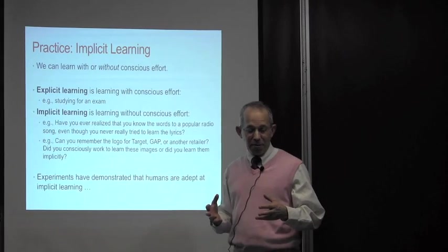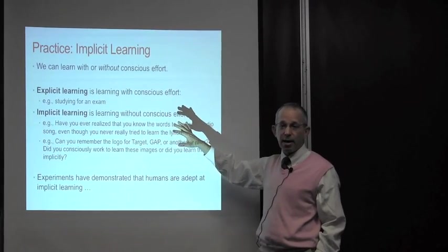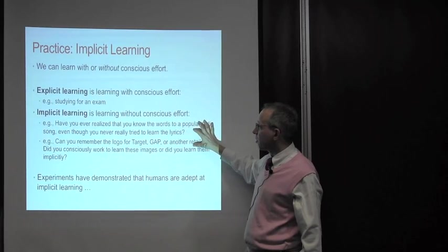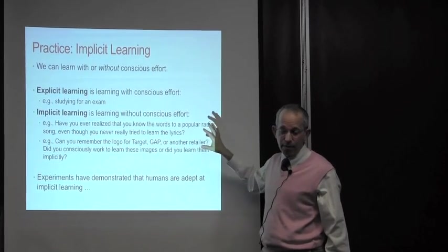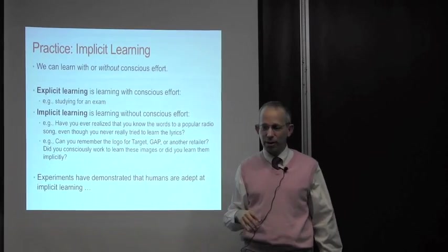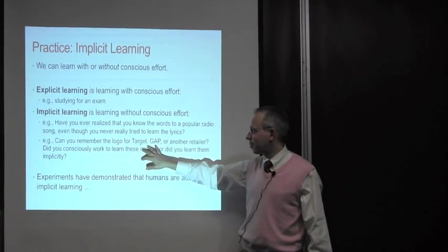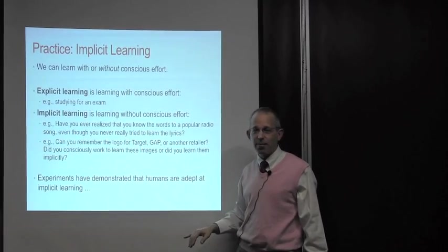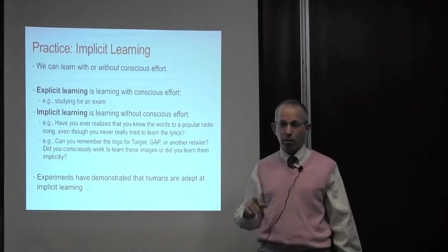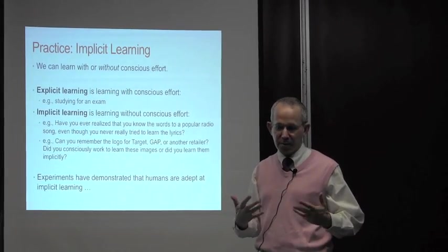Many skills are thought of as being a form of implicit learning. That means they can be learned without conscious effort. Explicit learning is learned with conscious effort, like studying for an exam. Implicit learning is without conscious effort. For example, if you've learned the words through some popular song but you didn't know it because it was just sort of playing through your head unconsciously. If you can remember the logo for stores like Target or Gap, you may know them not because you were ever expected to be tested on it, but just you've seen them enough and you sort of implicitly learn them.